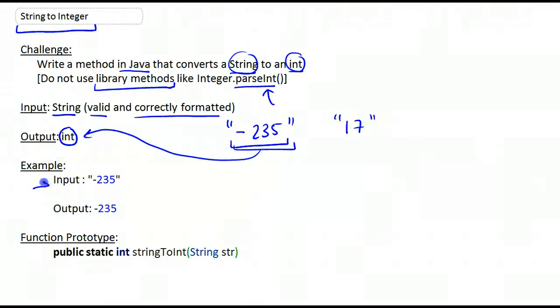For example, if you were given that input, this string, minus 235, then your output would also have to be minus 235, but as an int.